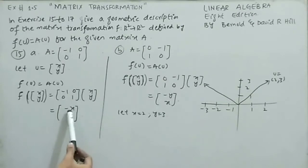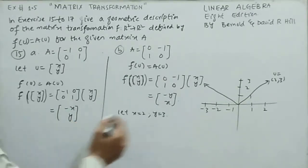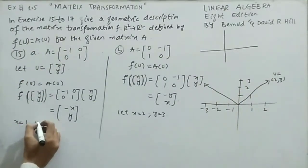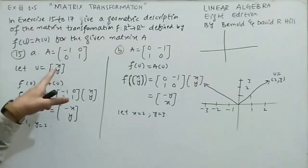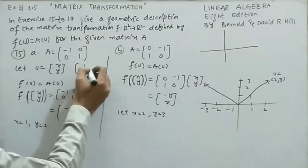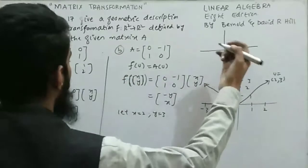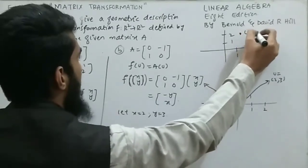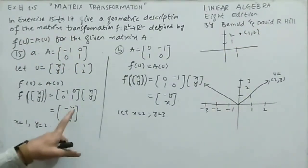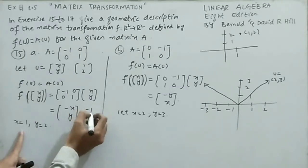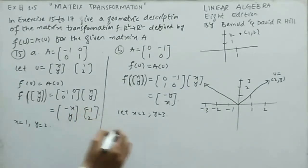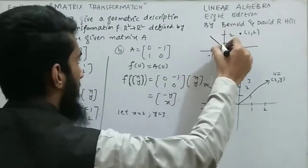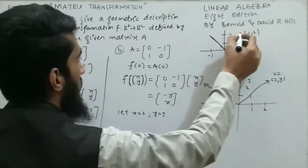Multiplying gives the image (-x, y). For example, let x=1, y=2. The original u = (1,2) is plotted in the first quadrant. The image is (-1,2), which lies in the second quadrant. This is actually a reflection across the y-axis — the x-component is negated while y stays the same.